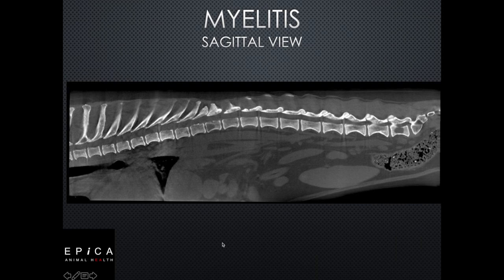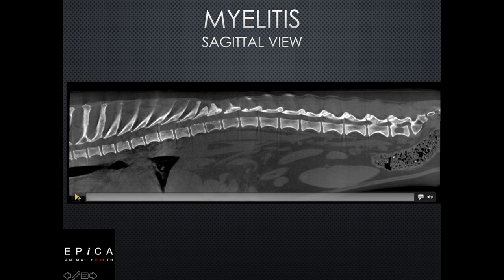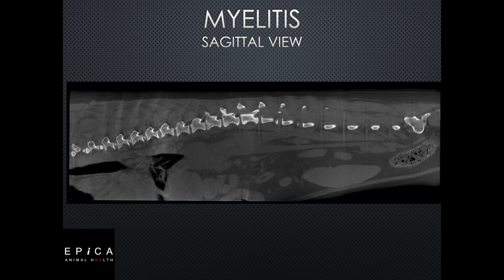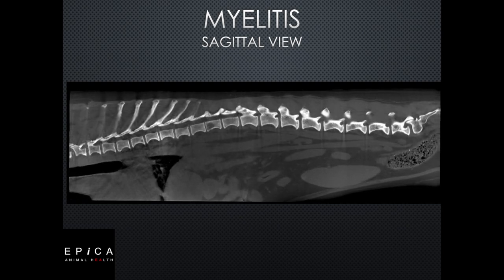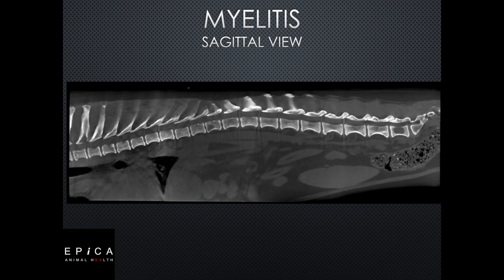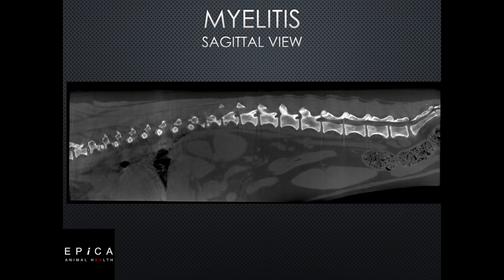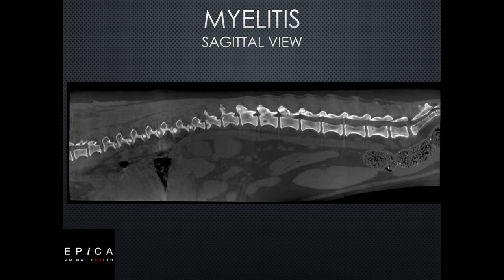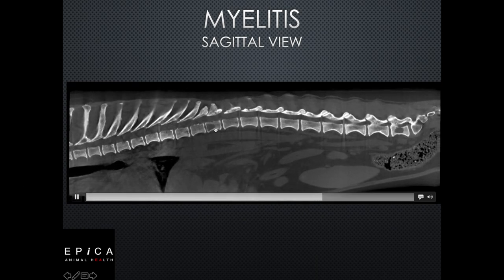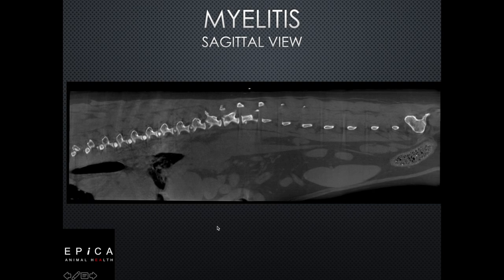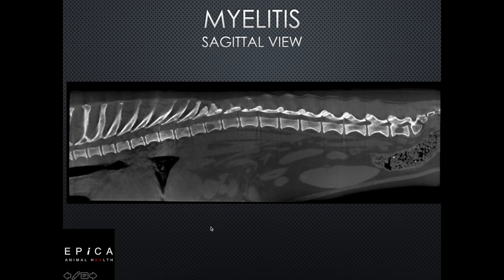Myelitis in the spine, as well as intervertebral disc disease and any ailments with the spine, can be identified with the Vimigo. The spine is another place where you can use contrast sometimes, but not all the time. In this case, contrast wasn't needed because this is just a degenerative disease in the vertebra where you can see holes popping up in the vertebra. This is also very valuable in 3D.